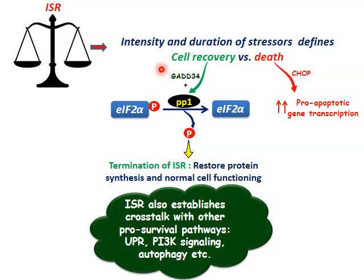Successful termination of the integrated stress response is essential for cell recovery when the cellular insult no longer exists. For termination of ISR, the phosphorylated form of EIF2-alpha must return to the dephosphorylated form. This dephosphorylation is brought about by a complex of phosphatases like GADD34 and PP1 (protein phosphatase 1). The dephosphorylated form of EIF2-alpha then activates the guanine nucleotide exchange factor EIF2B, allowing translation initiation and protein synthesis to be restored, which restores normal cell functioning.